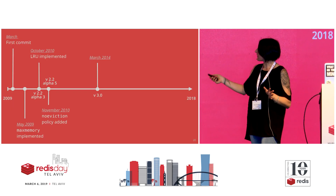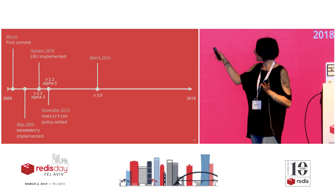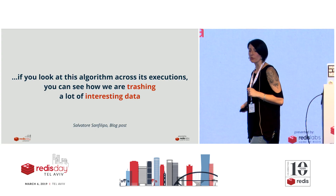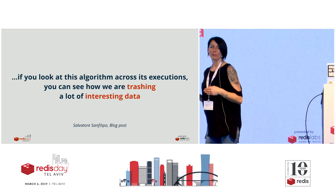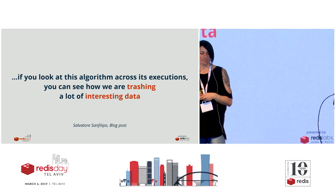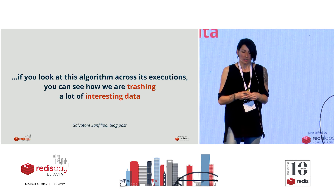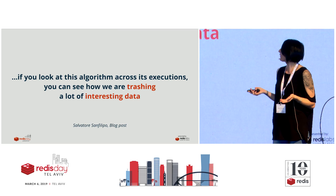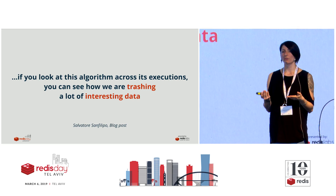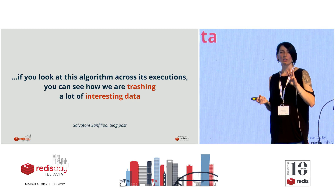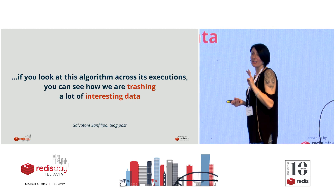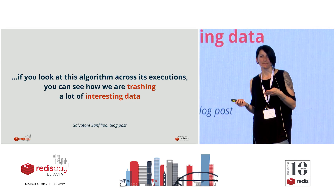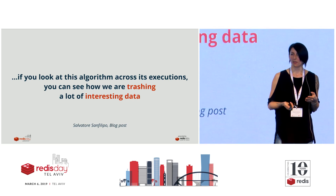So this is our timeline - this is how all of this developed, more or less. And in March 2014, it was time to start thinking about improving the LRU algorithm. Another quote from Salvatore: if you look at this algorithm across its executions, you can see that we are trashing a lot of interesting data. If we are choosing one key among just three keys, the probability of us evicting a good key is quite high. So, can we improve that somehow?